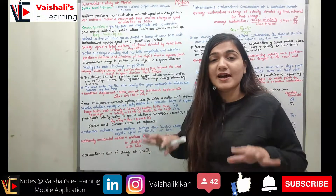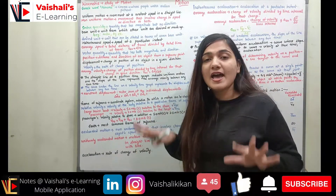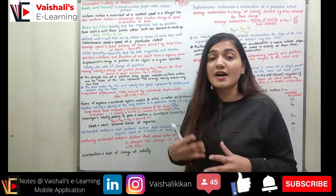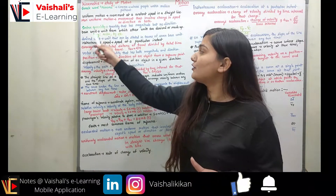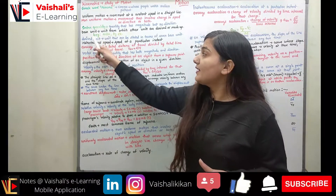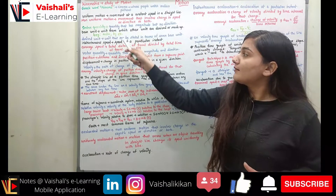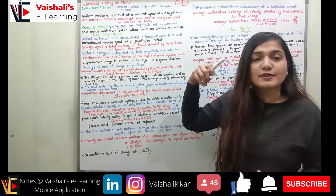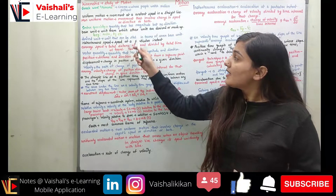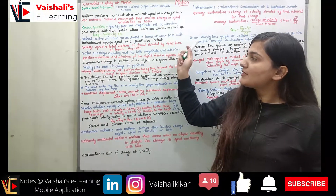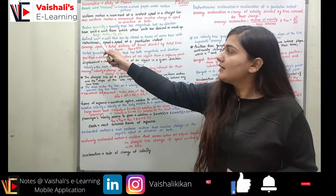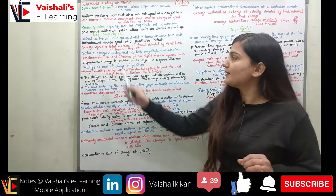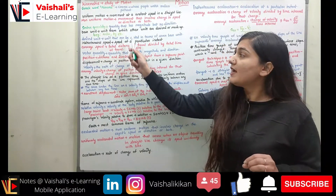The 7 SI base units are used to find different derived units. Derived units are made up of those 7 base units. Any unit that can be stated in terms of the 7 base units is a derived unit.